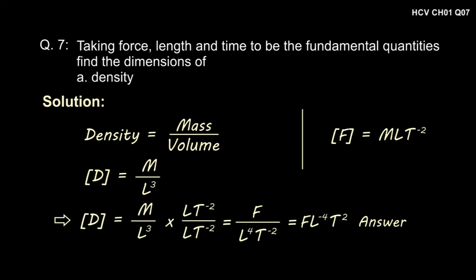Thus, we get dimension of density as dimension of force divided by L square T to the power minus 2, and thus it becomes FL to the power minus 4 into T square.